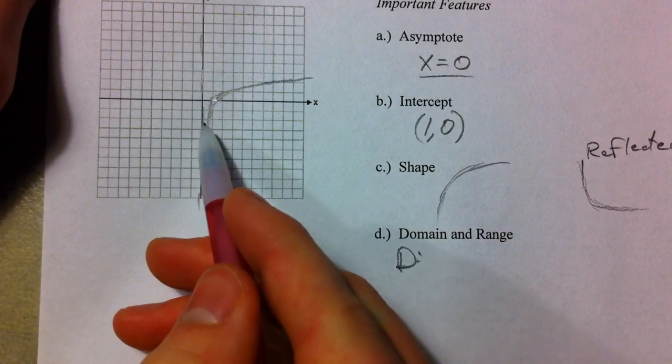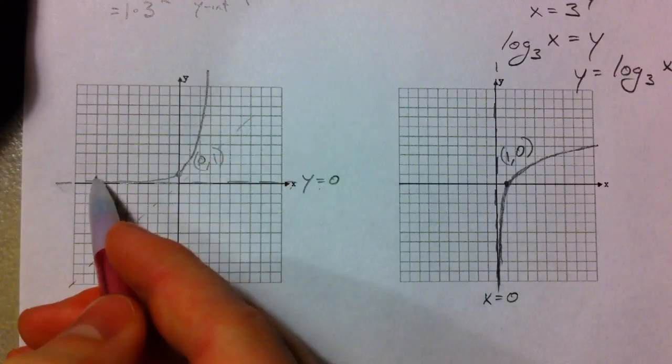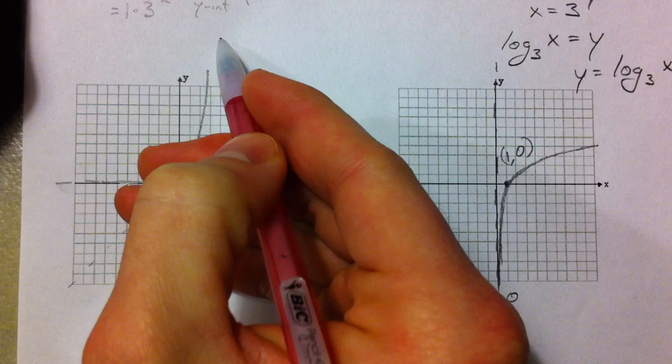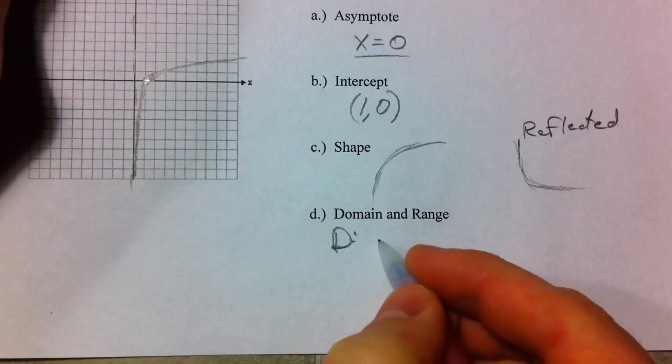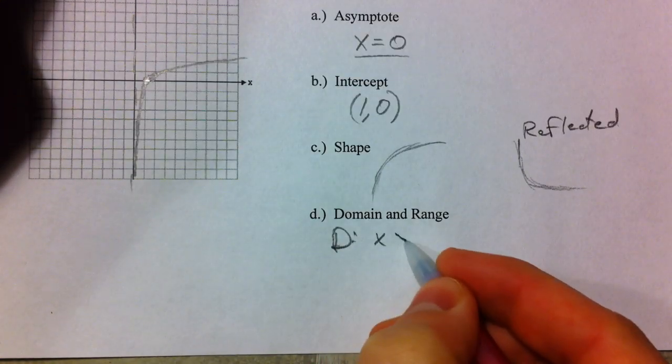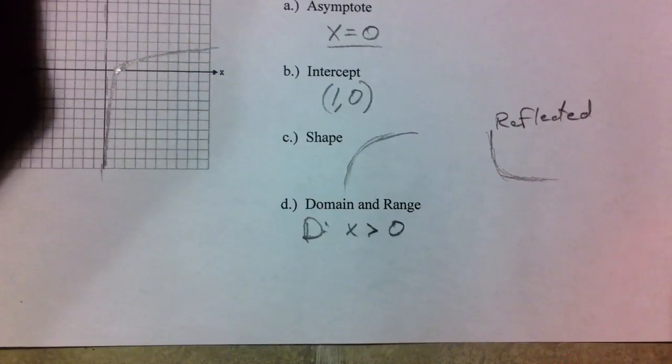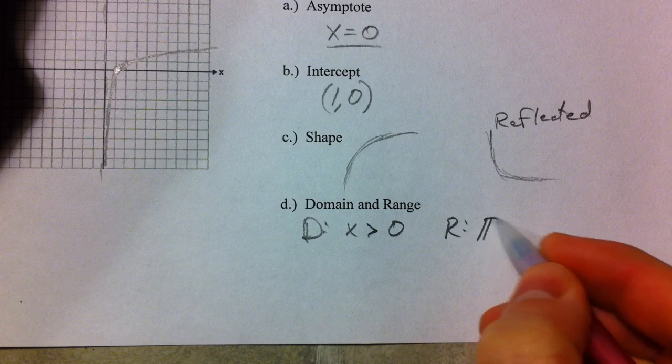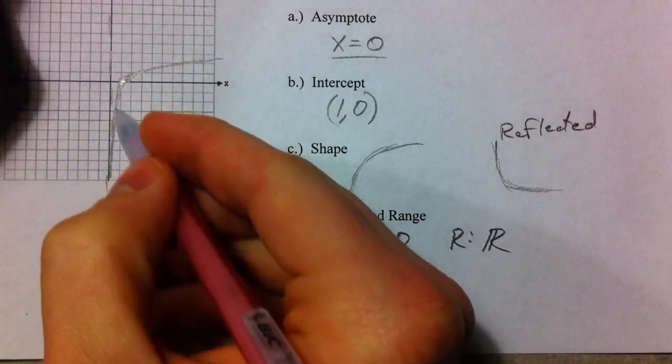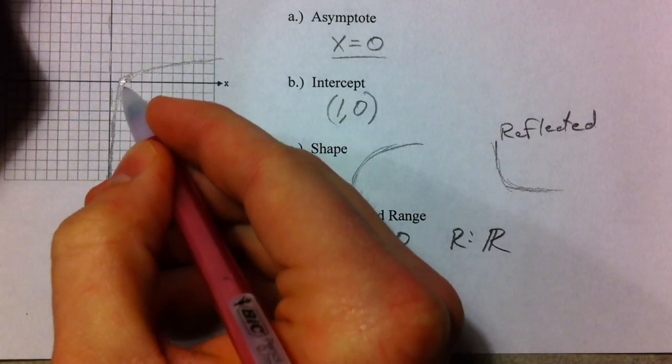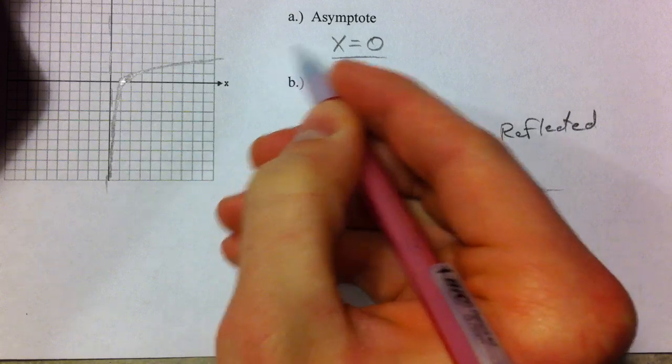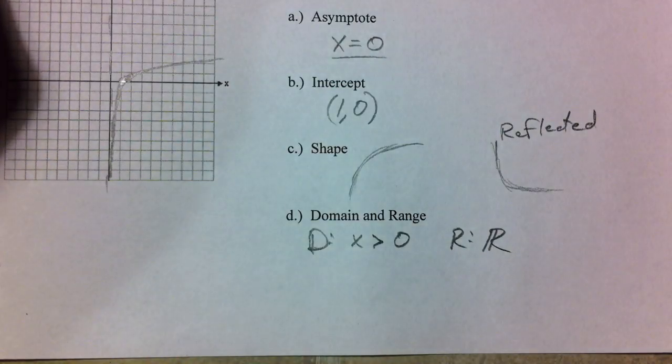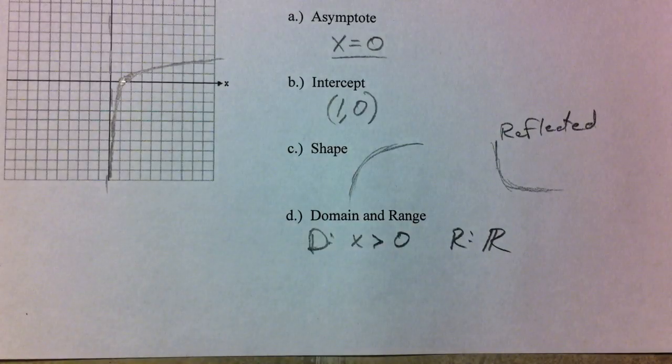Domain and range. Domain, like we said before, our range was with exponential functions was greater than 0. Now our domain is going to be x is greater than 0. Our range is all real numbers, all these negative y values over here, all these positive y values up here. And so all real numbers for our log graphs.